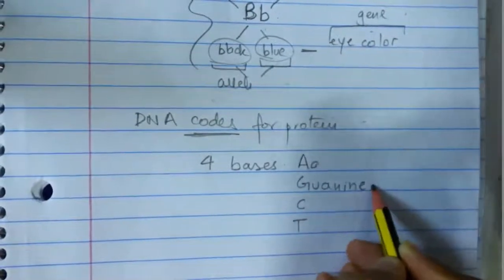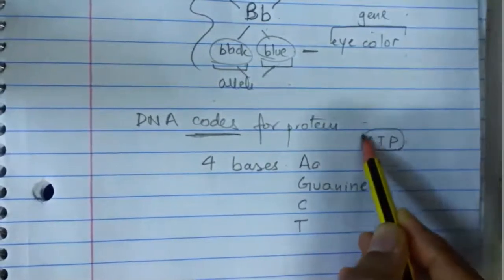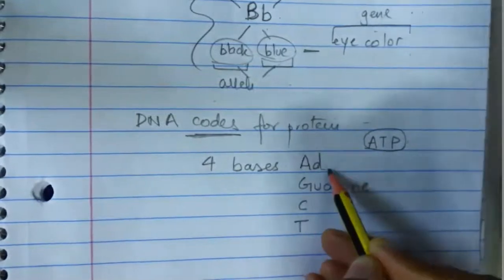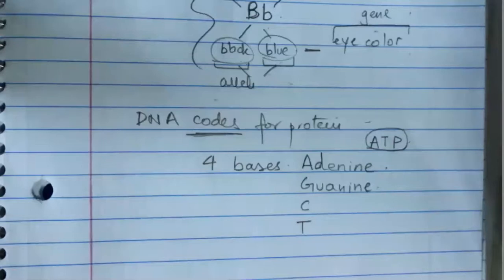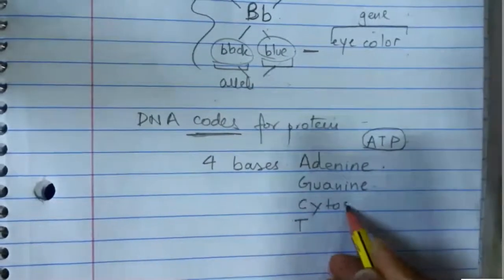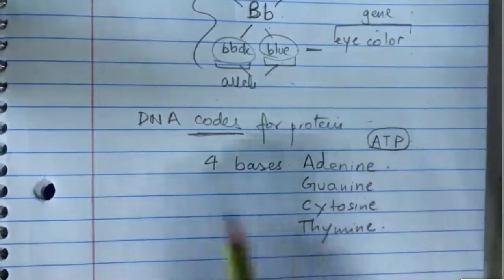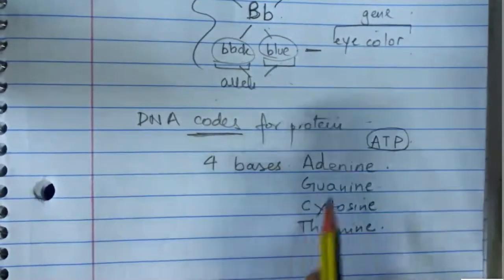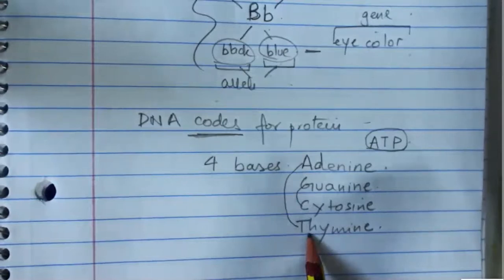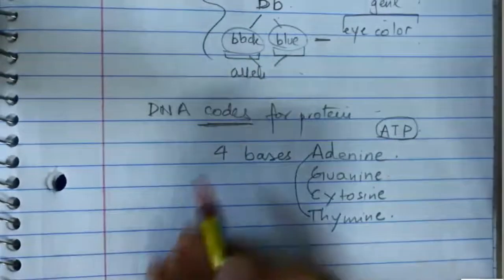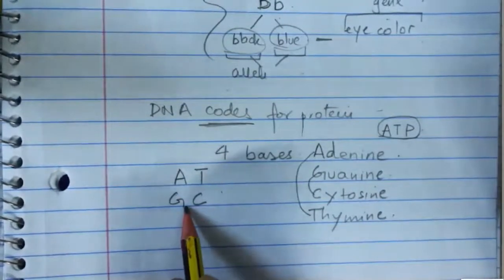The reason these bases pair only in specific ways is partly because one is a double ring and the other is a single ring. The space between the double helix of the DNA is only enough for three rings. So a double ring always pairs with a single ring — together they make three rings, which fits the space perfectly.